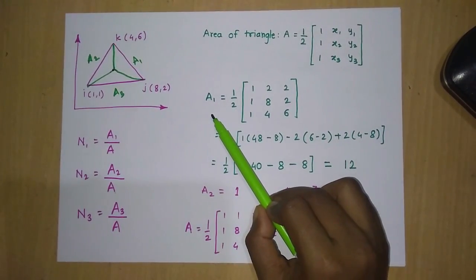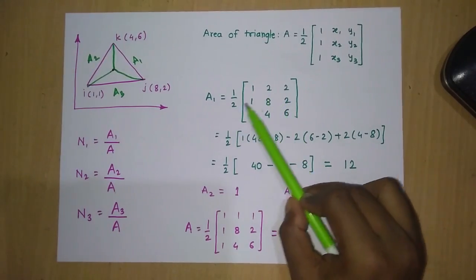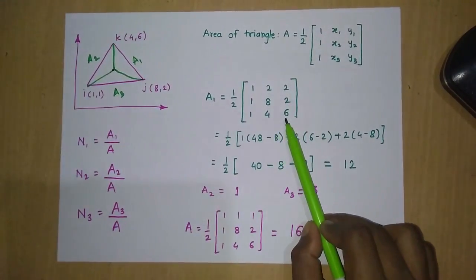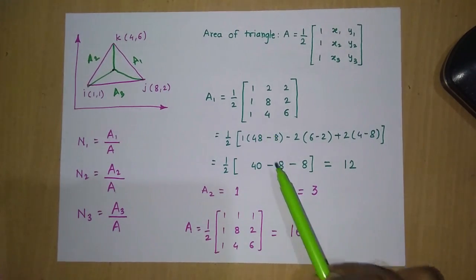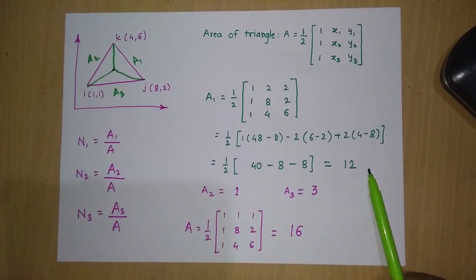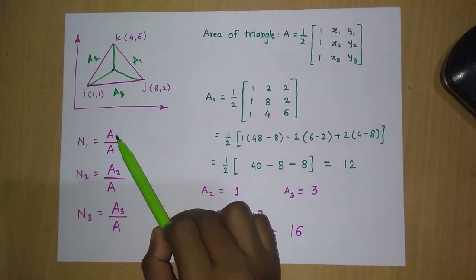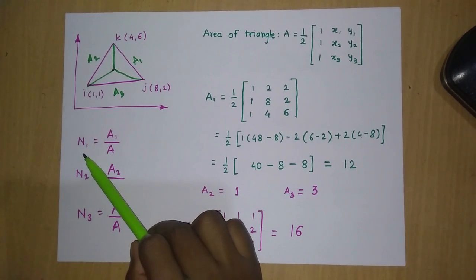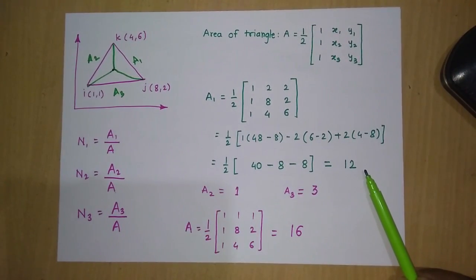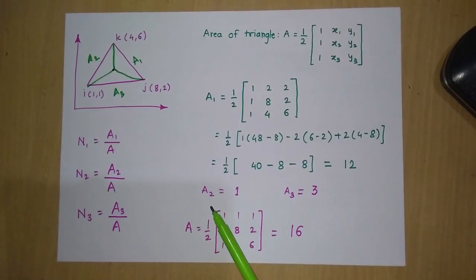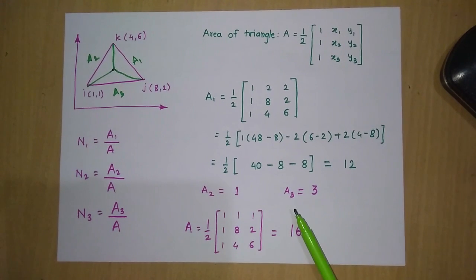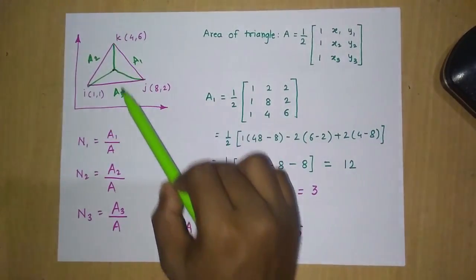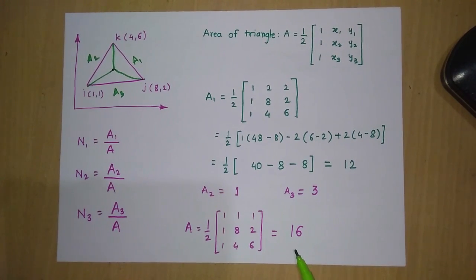For area A1, using coordinates of point P (2,2), node j (8,2), and node k (4,6) in the matrix formula gives A1 = 12. Using the same method, A2 = 1 and A3 = 3. For the total triangle area of nodes i, j, k, we apply the same method and get A = 16. We omit units here because they cancel when computing the shape functions.